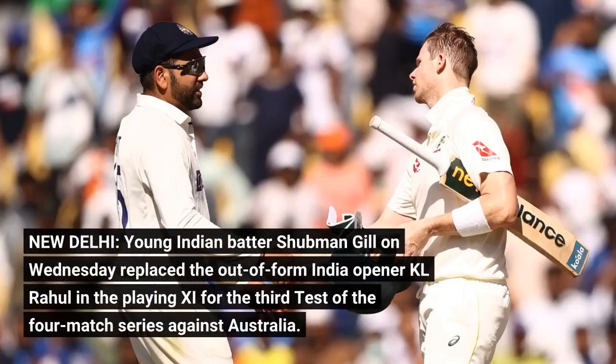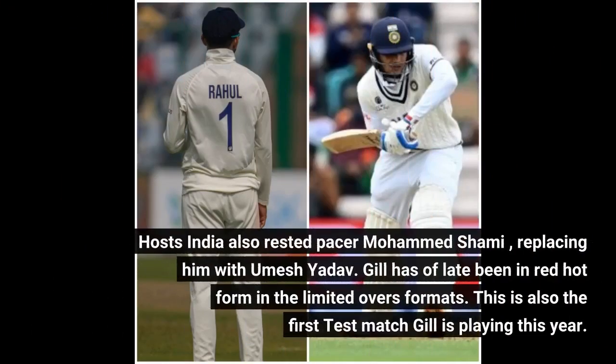New Delhi: Young Indian batter Shubhman Gill on Wednesday replaced the out-of-form India opener KL Rahul in the playing eleven for the third Test of the four-match series against Australia. Host India also rested pacer Mohammad Shami, replacing him with Umesh Yadav.